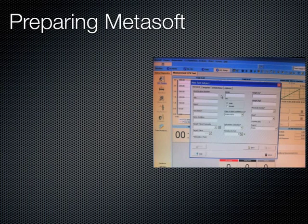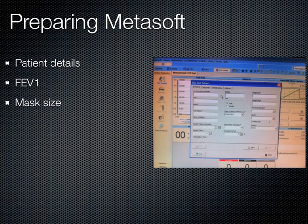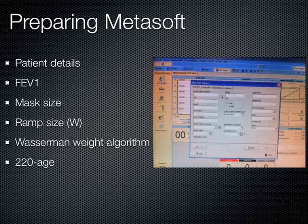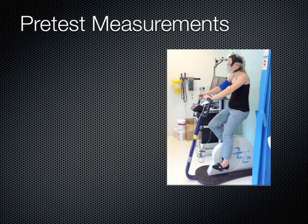The patient's details should be entered into our software, Metasoft. Under defined testing settings, the physiologist should enter the patient's FEV1 measured during the spirometry test, pick the mask size the patient will use, choose an appropriate ramp size, and alter the predicted value settings to the Wasserman weight algorithm, heart rate estimation of 220 minus age, and based on predicted VO2.